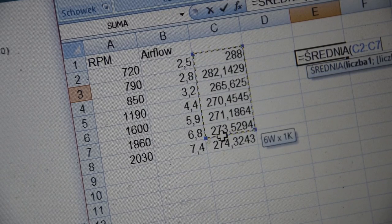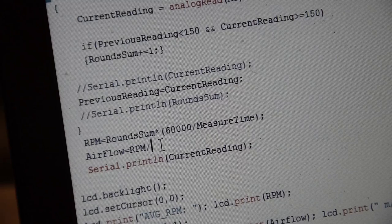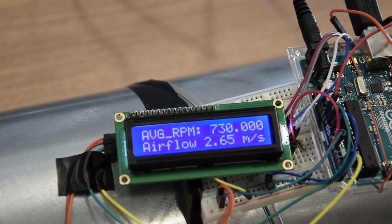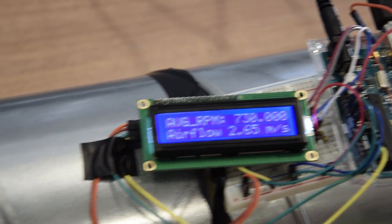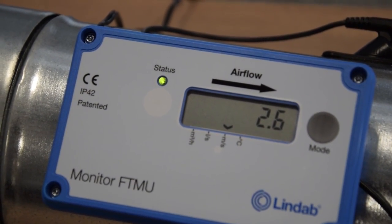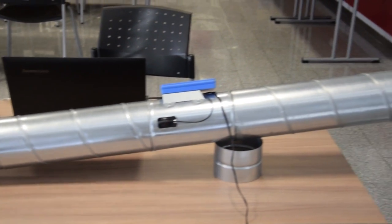After averaging results from multiple readings I get the final value. As expected after adding it to code readings on both devices are showing identical airflow in meters per second in full range of speeds possible on test equipment.